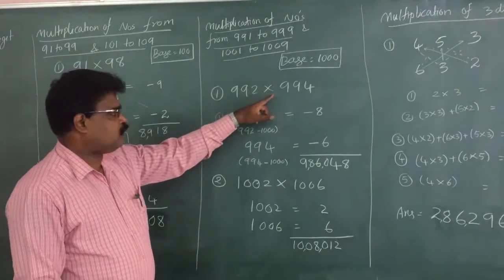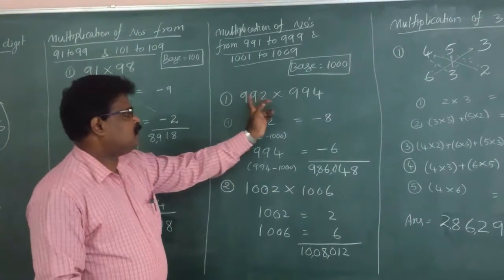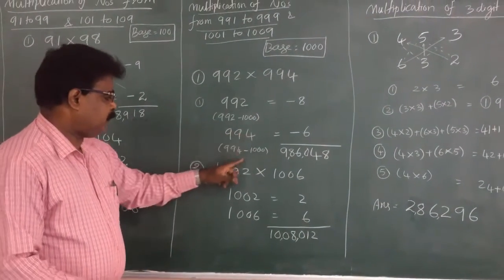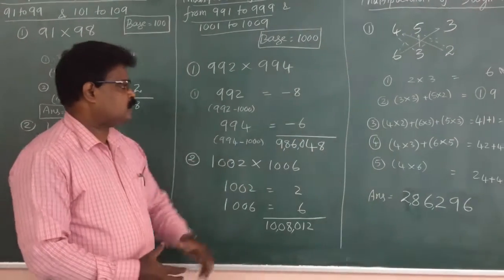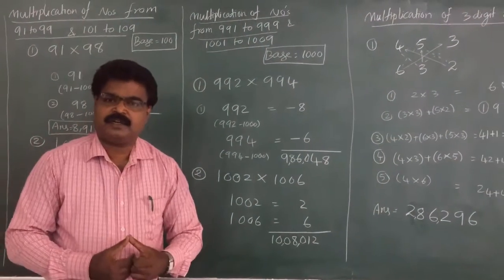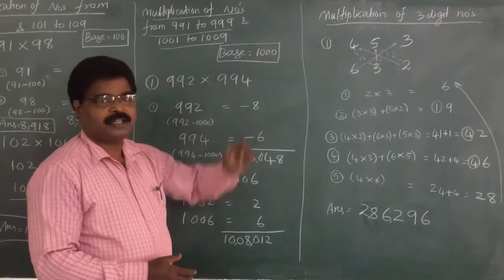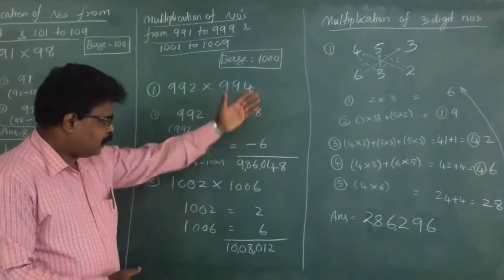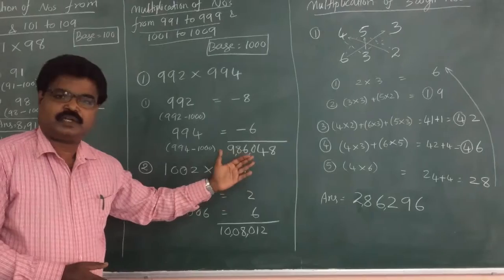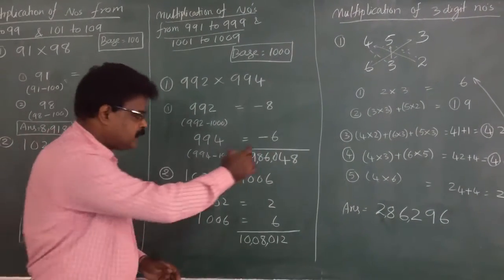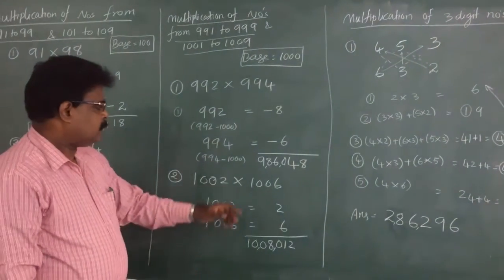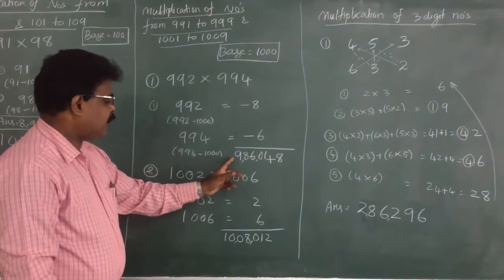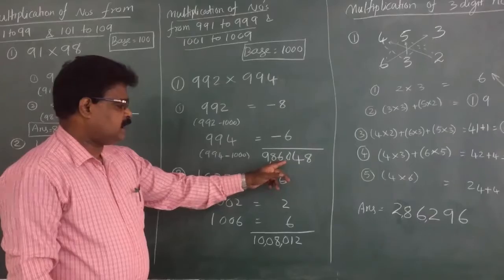First example: 992 into 994. Subtract the base — 992 minus 1000 equals minus 8, and 994 minus 1000 equals minus 6. Multiply: 8 into 6 equals 48. Since there are 3 zeros in the base, the product must have 3 digits — so write 048. Cross-add: 992 minus 6 equals 986. The final answer is 986,048.